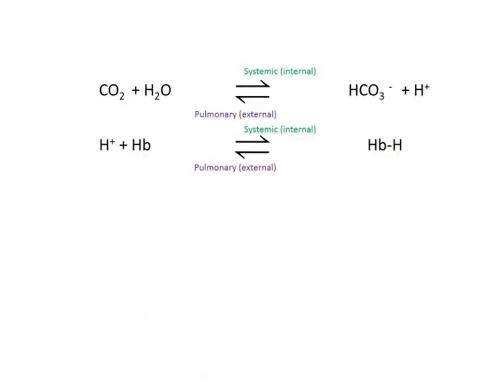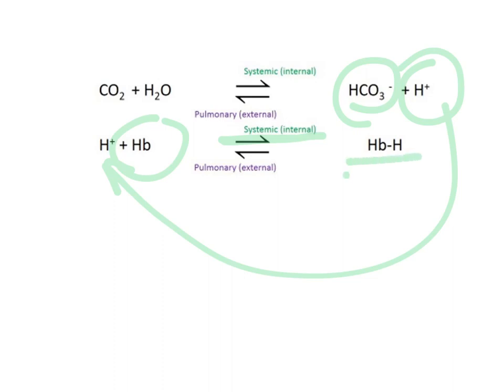One final concept: the role of hemoglobin in controlling pH. In addition to binding oxygen and carbon dioxide at different spots, hemoglobin also binds hydrogen ions. During internal respiration at the cells, the carbonic anhydrase reaction produces bicarbonate but also produces a hydrogen ion. That hydrogen ion combines with hemoglobin, which acts as a buffer to prevent fluctuations in pH.